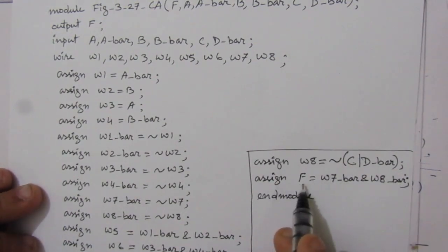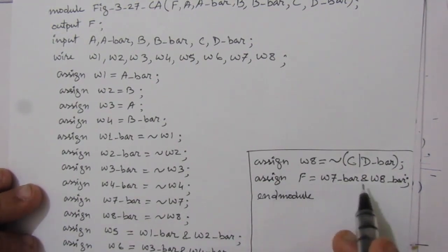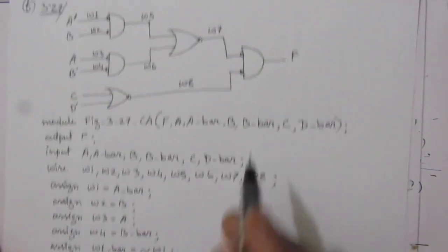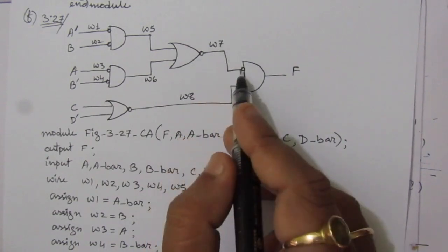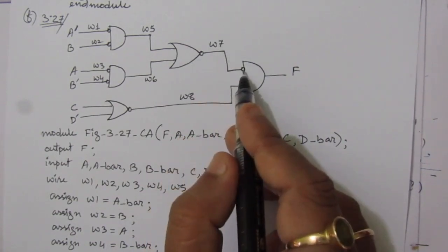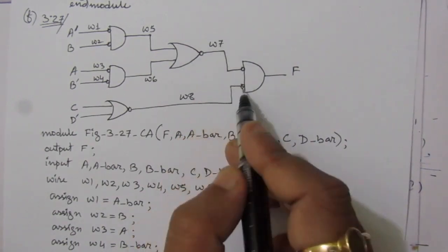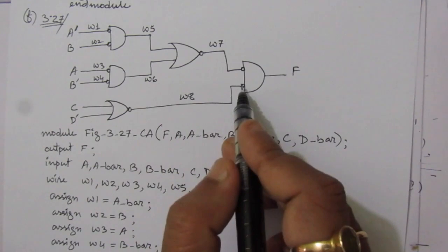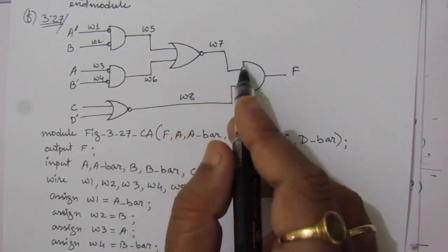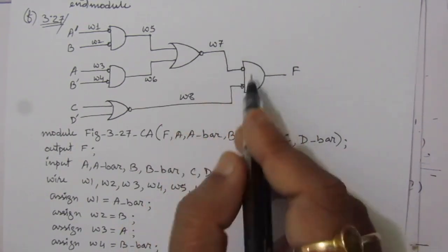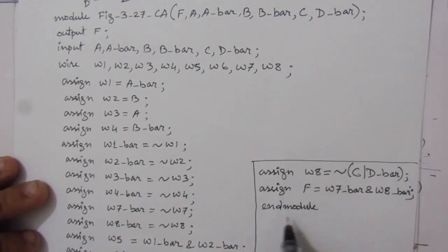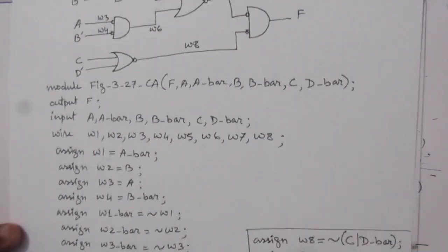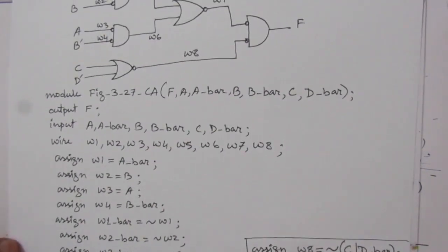F is the AND operation between W7-bar and W8-bar, because we have inverted inputs (bubbles) at the AND gate. So assign F = W7-bar AND W8-bar. Then we write endmodule. This completes the solution of the sixth part of the problem.